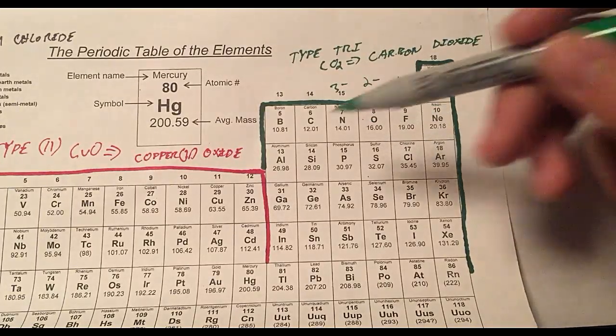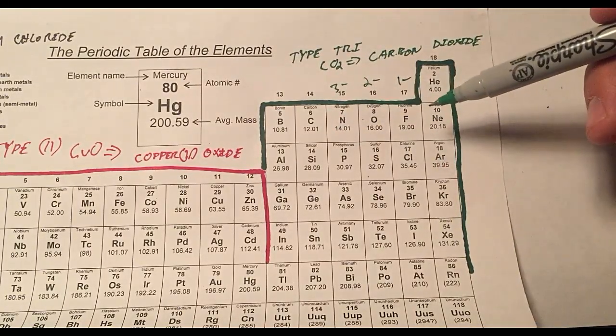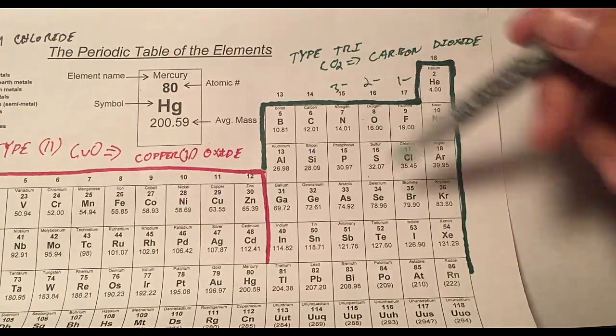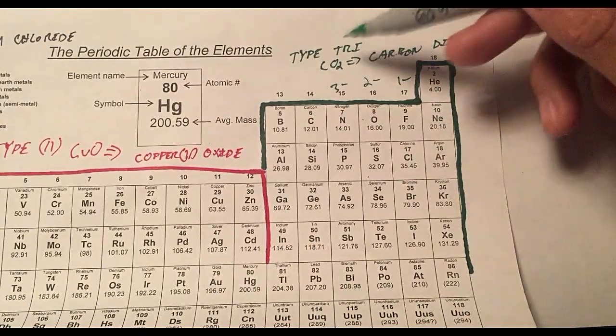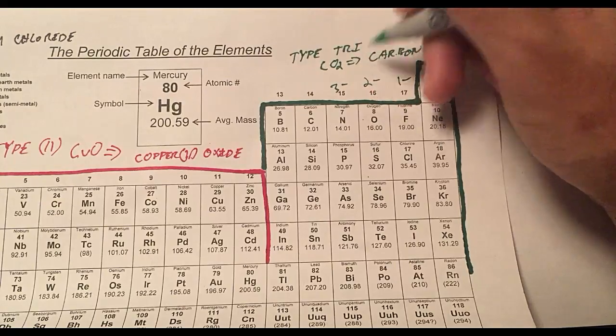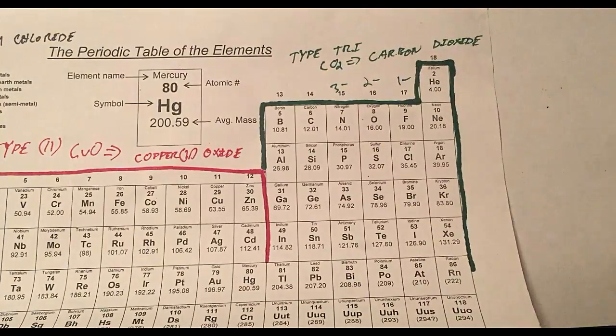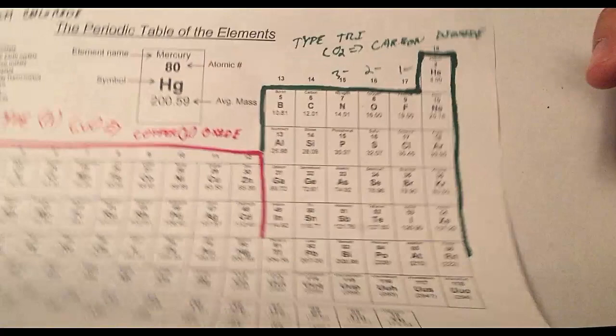And fluorine. Both of those atoms, both those elements are in the P block in this area here, which means I need to use type tri and tri meaning tri or di or mono, those prefixes, right?